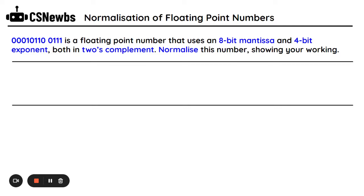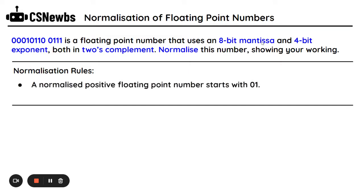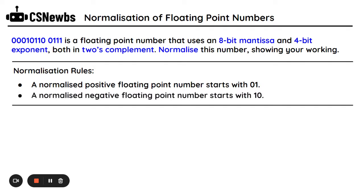When using floating point numbers, you will also be using 2's complement, where the most significant bit is a negative value. There are two normalization rules we need to know. A positive floating point number is normalized when it starts 0, 1, and a negative floating point number is normalized when it starts with 1, 0.